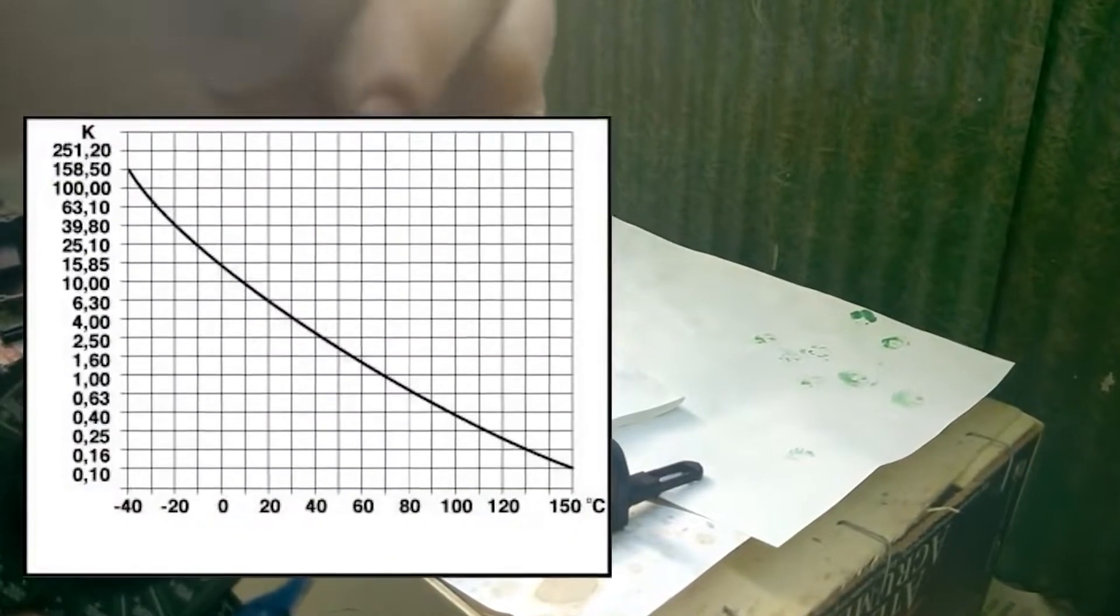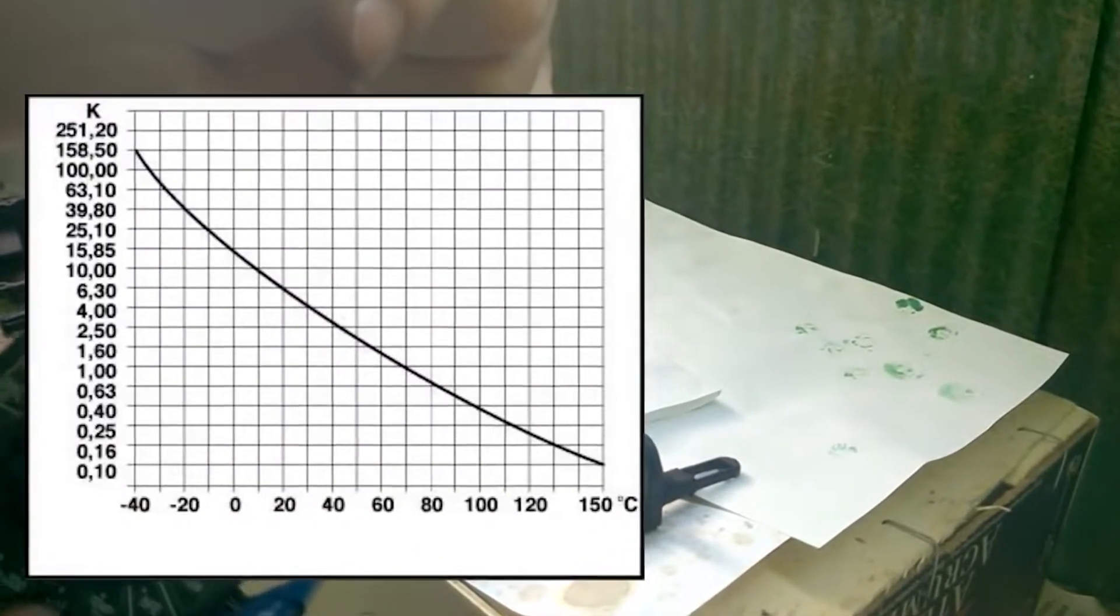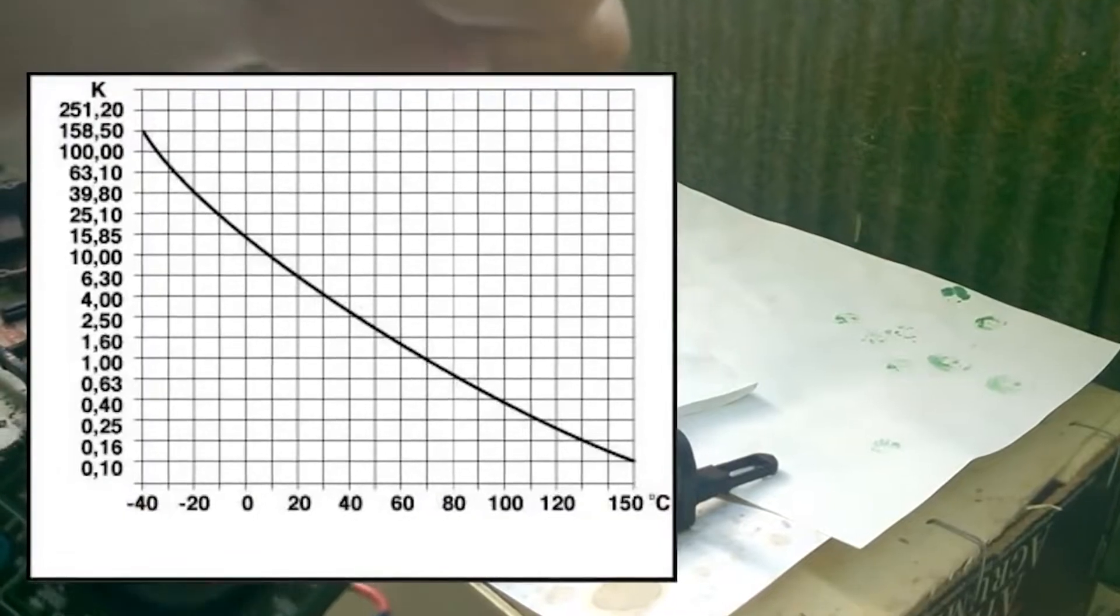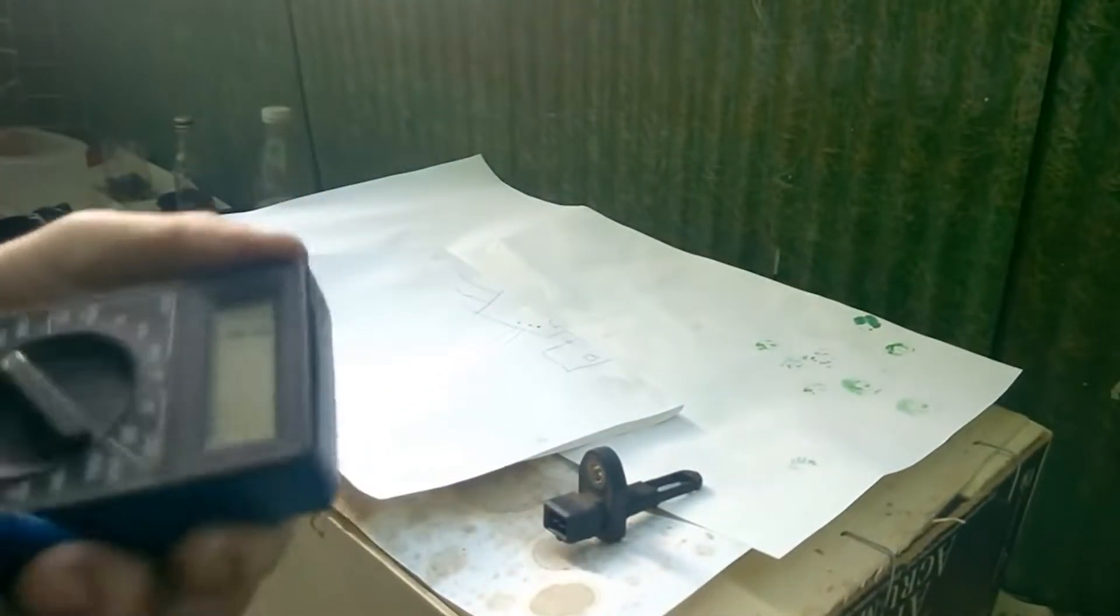On the screen you can see a special plate that shows how the resistance of the sensor changes according to air temperature. Currently the temperature is around 10 degrees Celsius or 50 Fahrenheit.